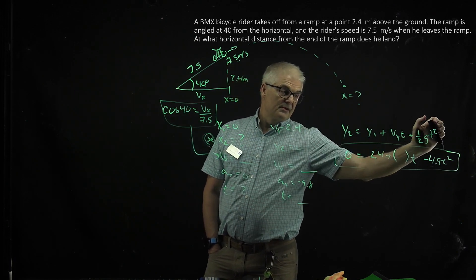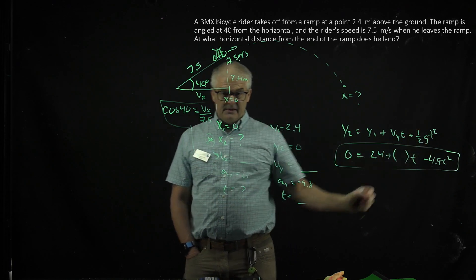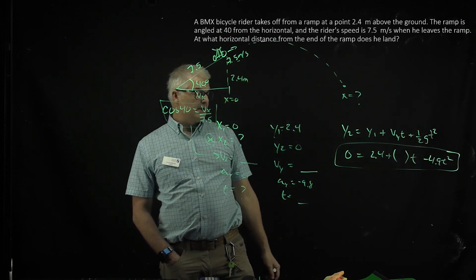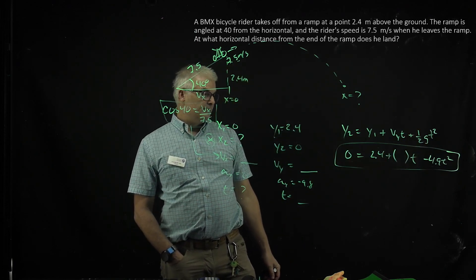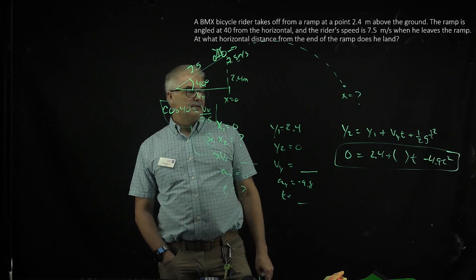But again, this term here in the x will cancel off the 1 half gt squared. It'll cancel off because there's no acceleration, because ax is 0, and that's how you can find the range.